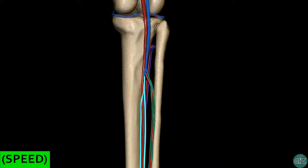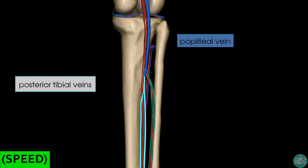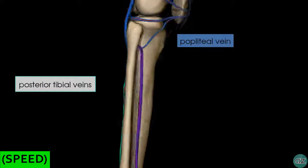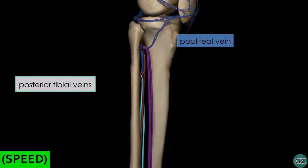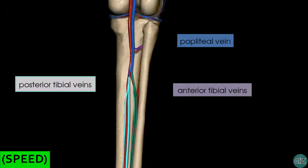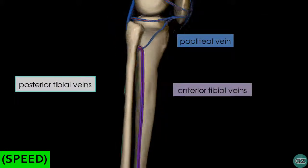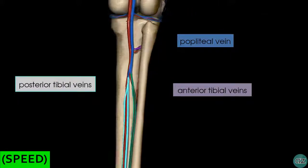Now looking at a posterior view of the leg just inferior to the knee joint, you can see the posterior tibial vein in light blue draining into the popliteal vein. Rotating the model anteriorly, you can see the anterior tibial veins highlighted in purple draining into the popliteal vein as well — they pass from the anterior compartment to the posterior compartment and drain into the popliteal vein.